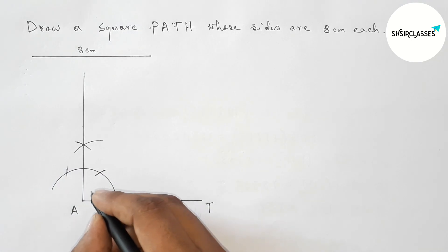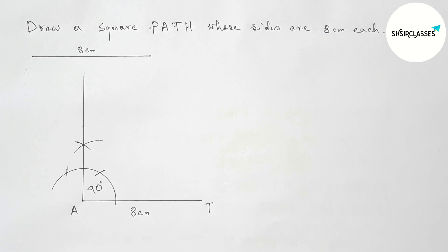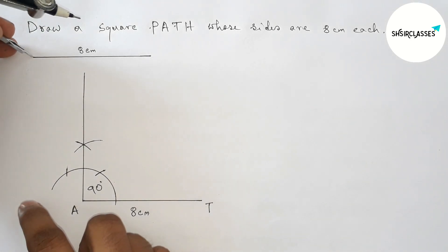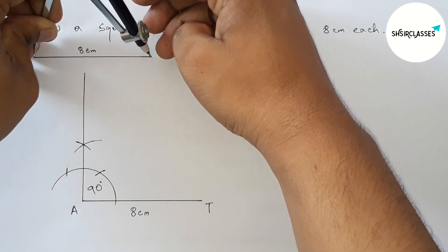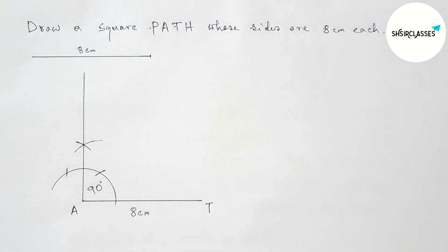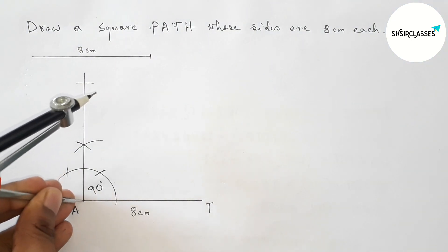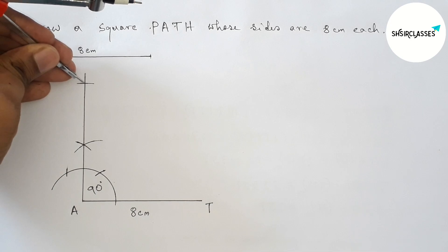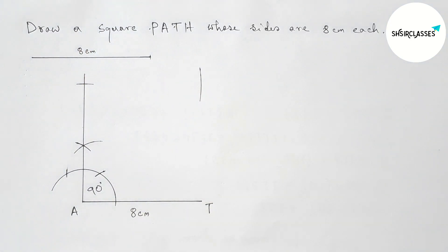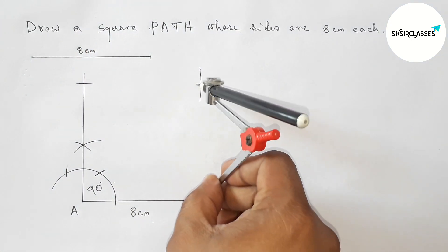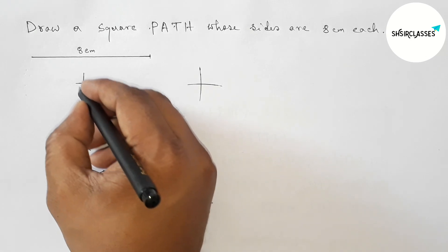Next, taking the length 8 centimeters with the help of a compass. Putting the compass on point A and cutting here again with the same length. Putting the compass here and drawing an arc, then putting the compass on point T and cutting here.